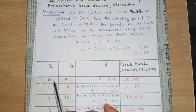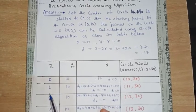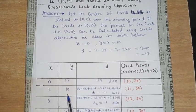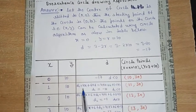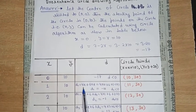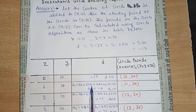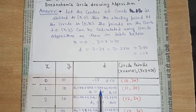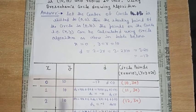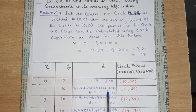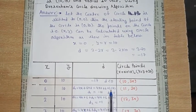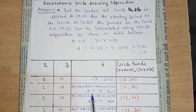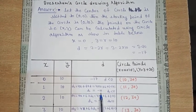Since d < 0, there will be an increment on the x-axis: 0 becomes 1. The y-axis remains the same: 10 stays 10. The formula for d in this case is d1 = 4x + 6 + d = 4 into 0 (previous value of x) + 6 + d (which is minus 17). Calculating this, d1 = minus 11.